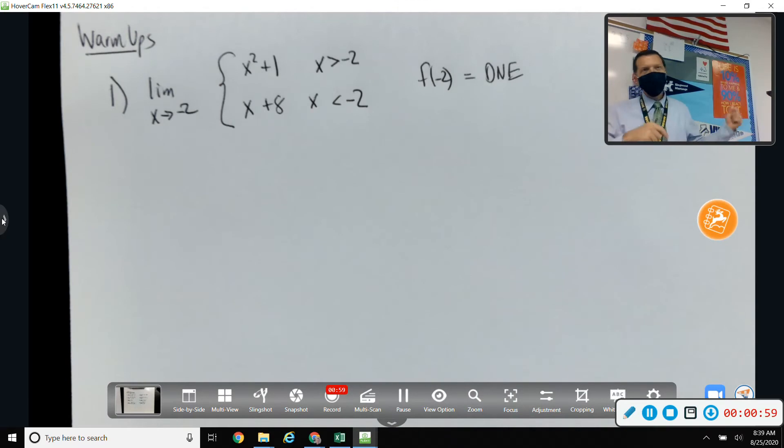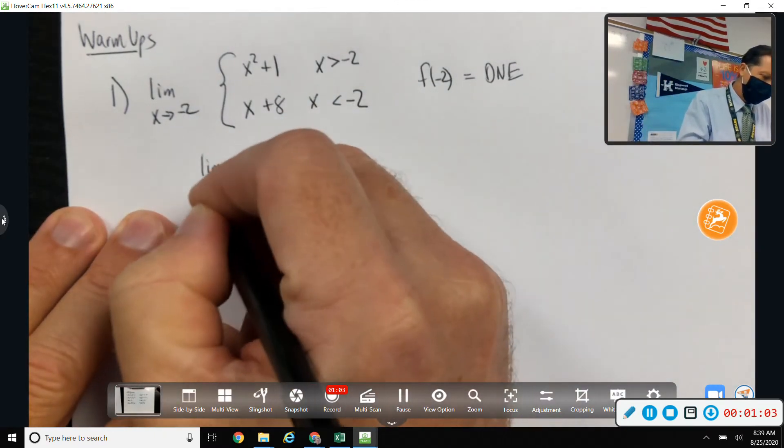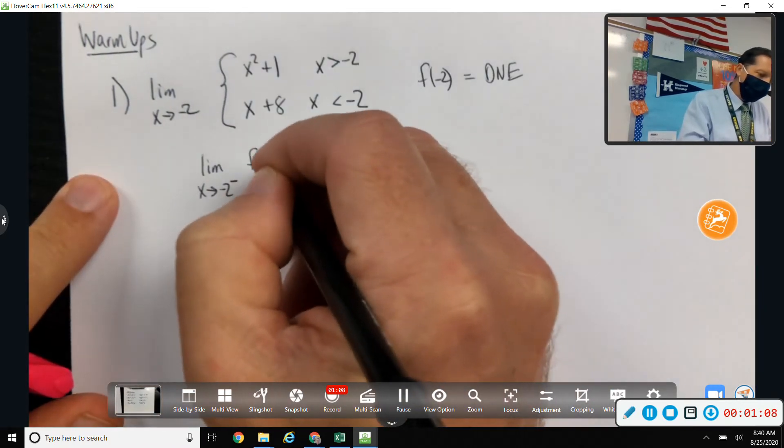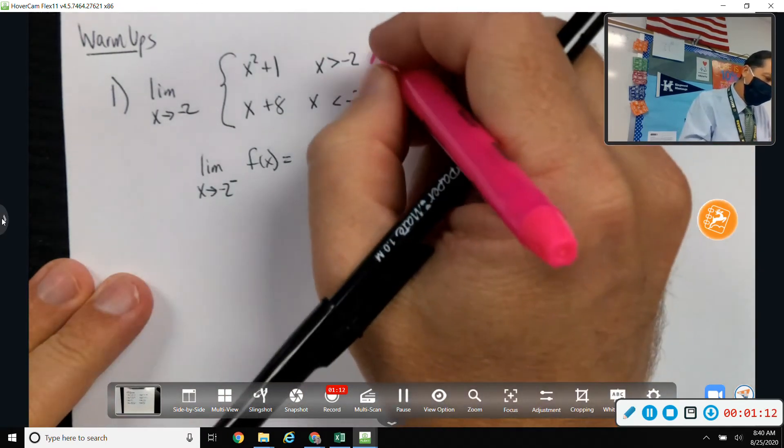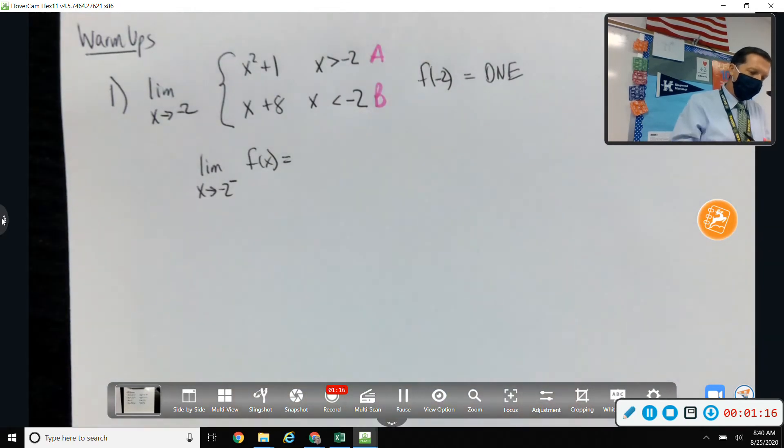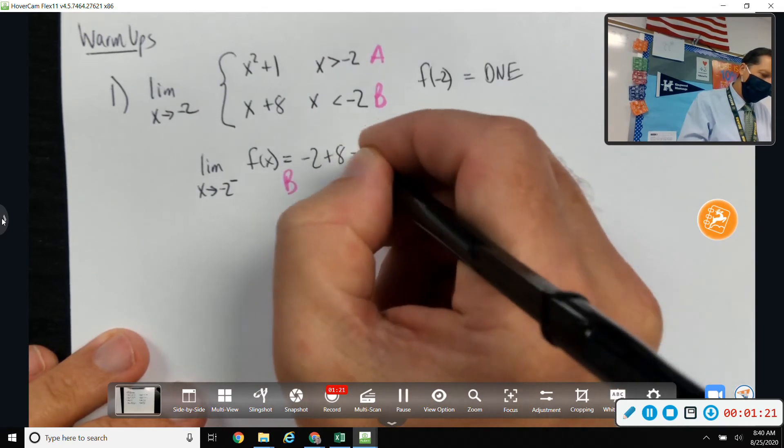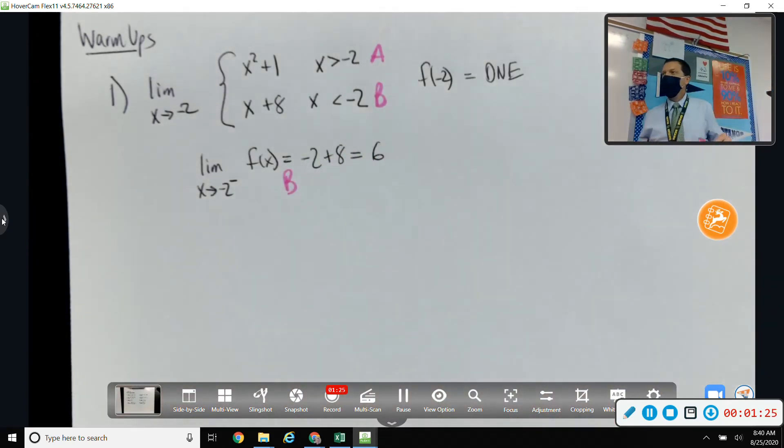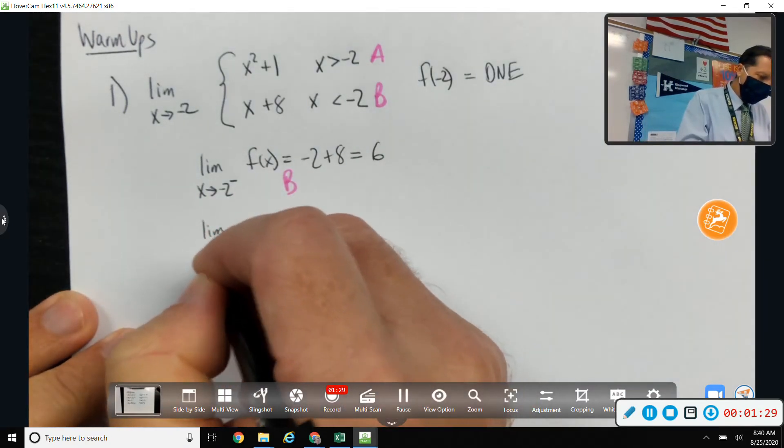So we want to come in from the left, come in from the right, and see what happens. So from the left, I'm just going to call it f of x instead of writing that whole thing again. From the left, that would be a little less than negative 2, so that would be on branch B here. So negative 2 plus 8 equals 6. So coming in from the left, we're headed towards 6. Coming in from the right...